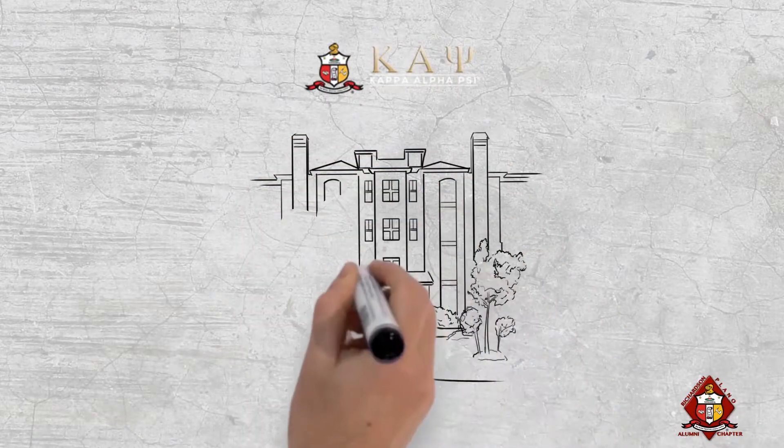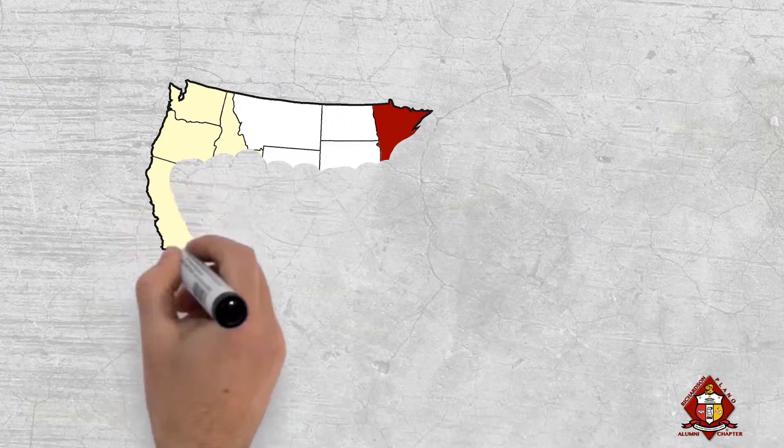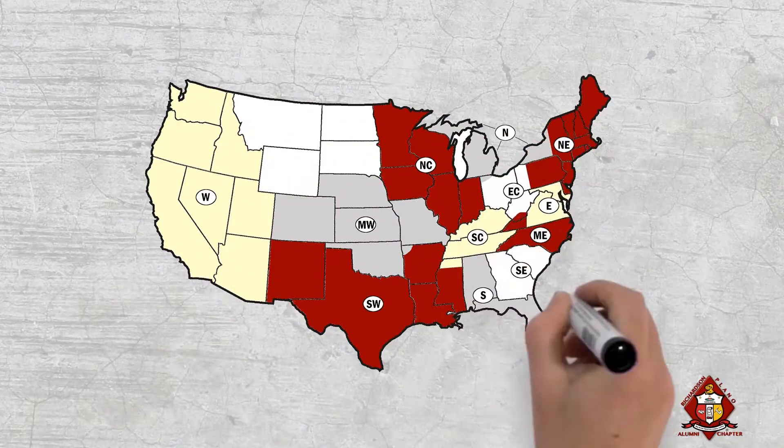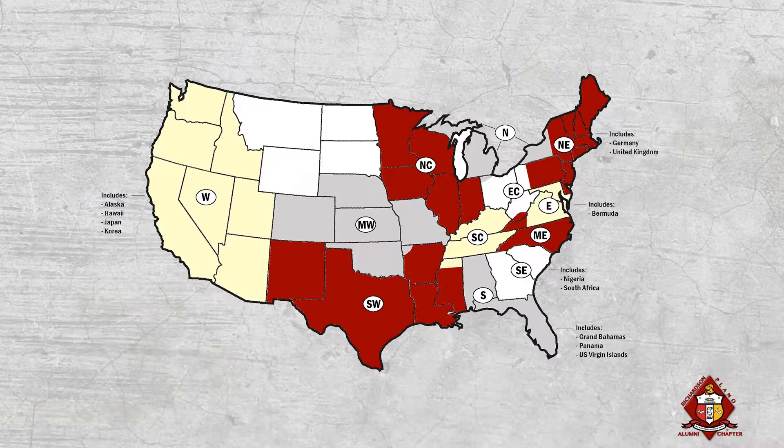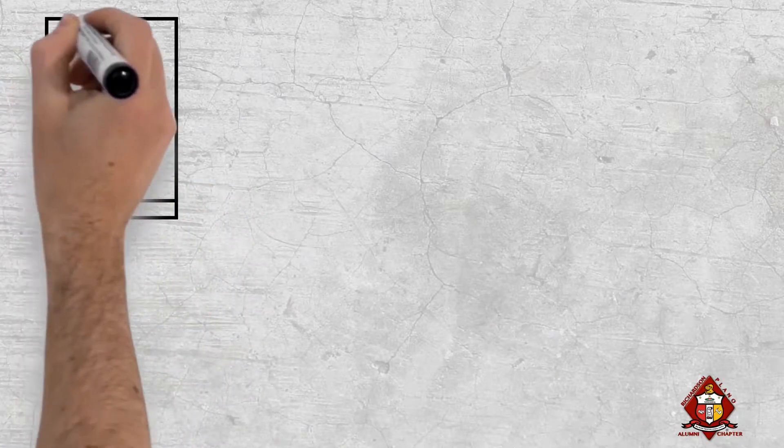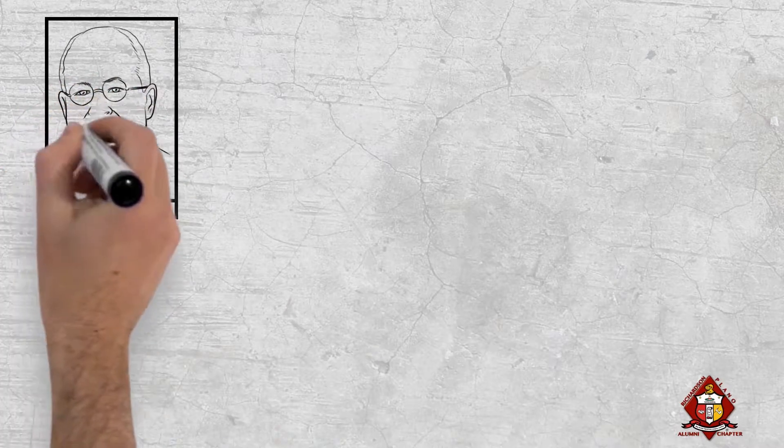Kappa Alpha Psi, a college fraternity now comprised of functioning undergraduate and alumni chapters on major campuses and in cities throughout the country, is the crystallization of a dream. It is the beautiful realization of a vision shared commonly by the late revered founders.